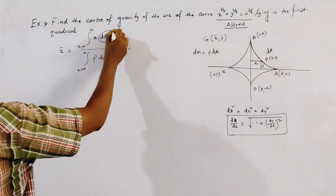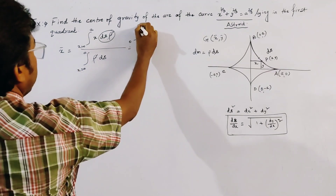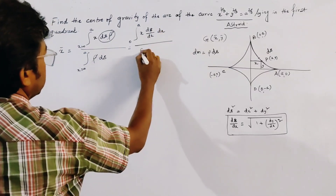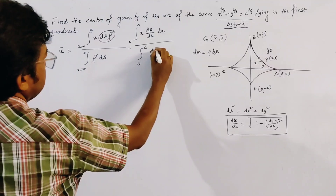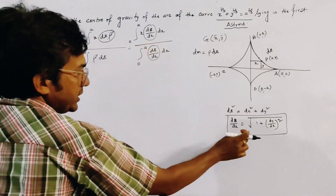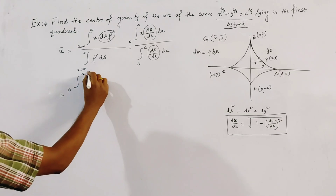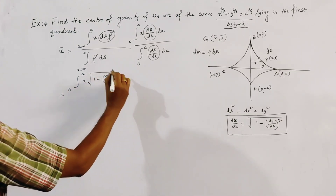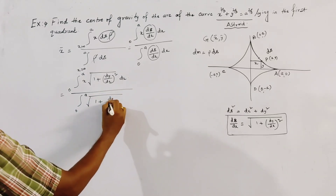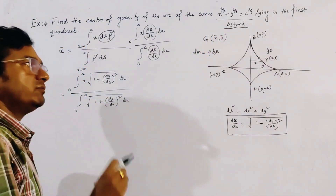We cancel out ρ from both numerator and denominator because ρ is a constant. So x̄ equals integration from 0 to a of x·ds divided by integration from 0 to a of ds. Substituting ds = √(1 + (dy/dx)²) dx in both integrations, we get integration from 0 to a of x·√(1 + (dy/dx)²) dx divided by integration from 0 to a of √(1 + (dy/dx)²) dx. Now from the curve we find the value of dy/dx.